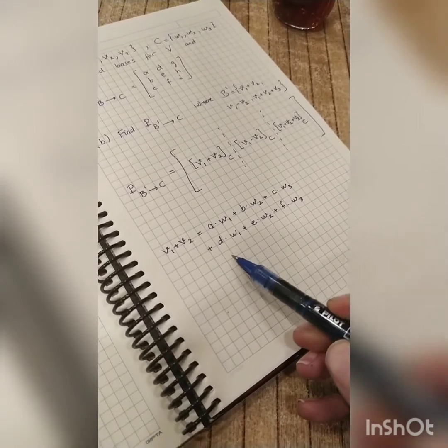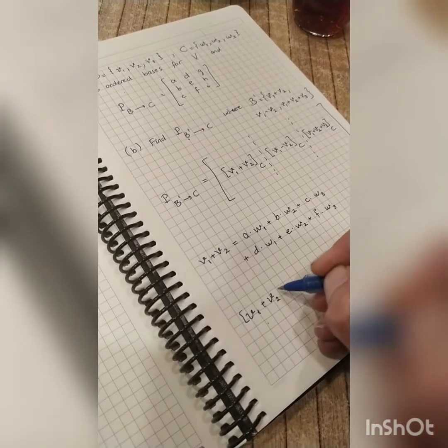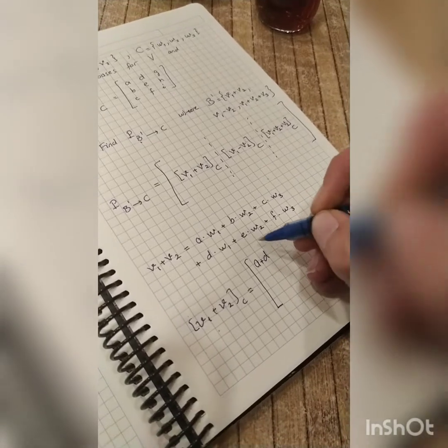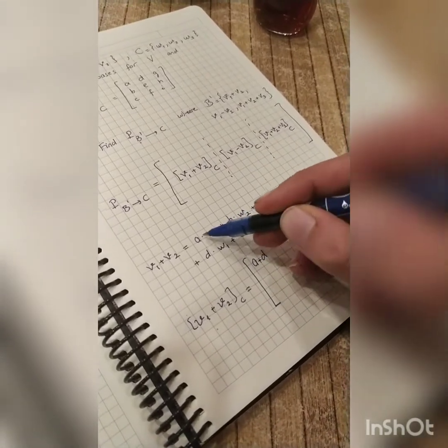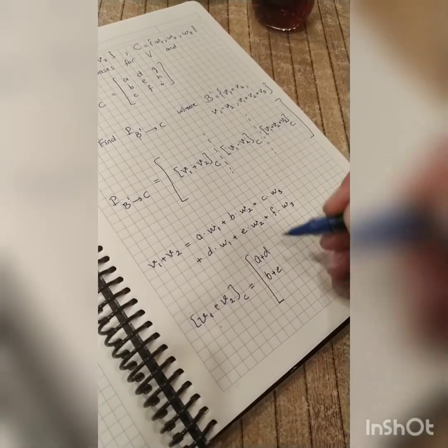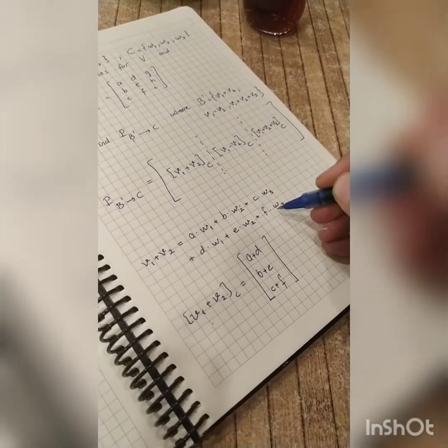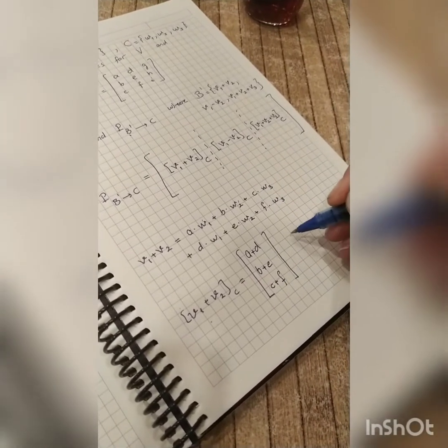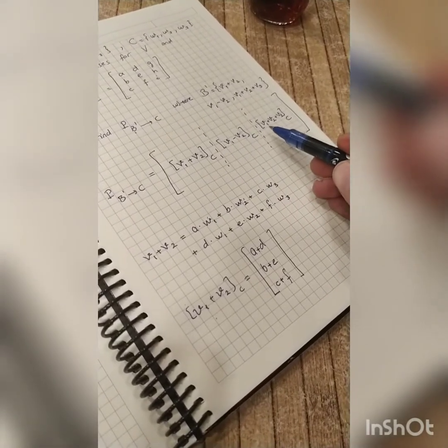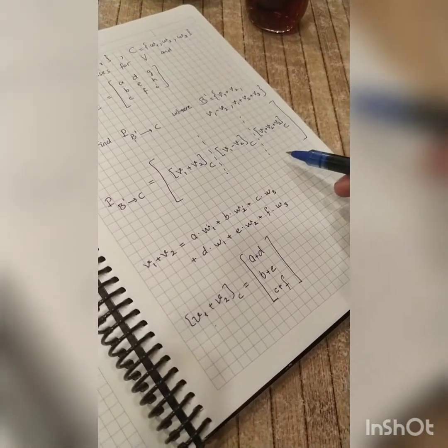So when I combine these, arrange this linear combination, we see that the coordinates of V1 plus V2 in C is actually A plus D. As you see, I get it from here, the coefficient of W1 is here, A plus D. Then B plus E, the coefficient of W2, and then C plus F, the coefficient of W3 in this vector. So likewise, we will go for the coordinates of W1 minus V2, and then V1 plus V2 plus V3, etc., and then you will write them to the columns of this matrix.